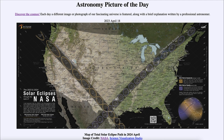So what do we see here? We see a map showing the total eclipse path — actually two of them coming up. The first is in October of this year, and then there will be an annular solar eclipse.